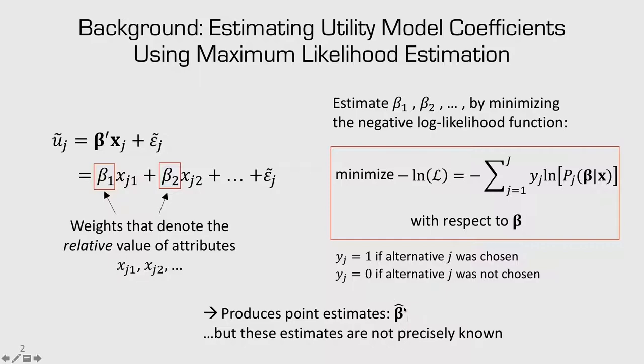an estimate of the vector of beta parameters. But these are not precisely known. So in this lecture, we're going to start figuring out how we can estimate the error around these point estimates.